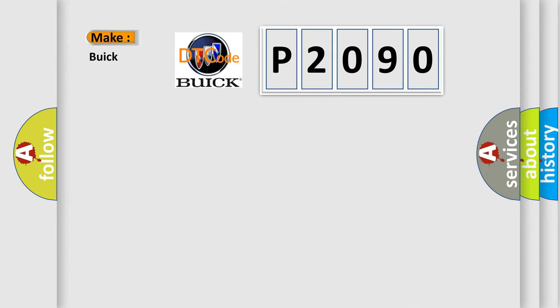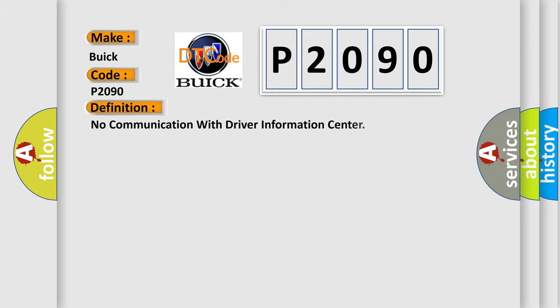So, what does the diagnostic trouble code P2090 interpret specifically for Buick car manufacturers? The basic definition is: No communication with driver information center. And now this is a short description of this DTC code.